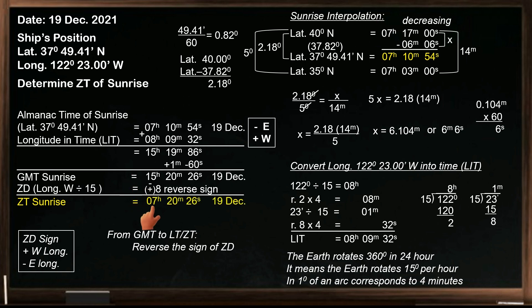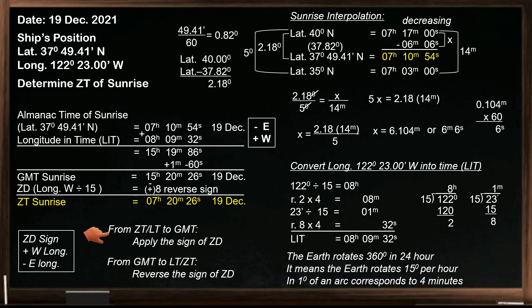The zone time of sunrise is 07 hours 20 minutes and 26 seconds on December 19th. On the other hand, when finding GMT from the given local time, apply the sign of zone description. For the sunset, do the same procedure on how to determine the sunrise.